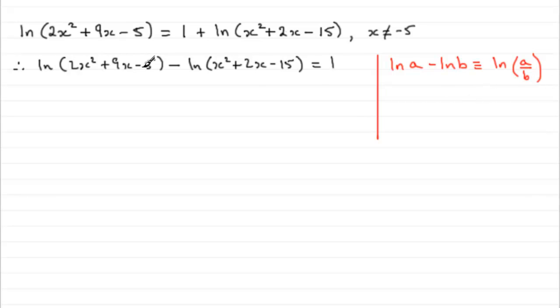So we can apply that here. And that would mean that we therefore have the natural log of (2x² + 9x - 5) divided then by (x² + 2x - 15). So that's using this rule here. We can put that in brackets and it equals 1.